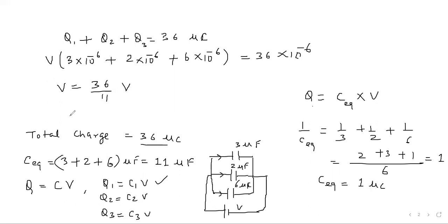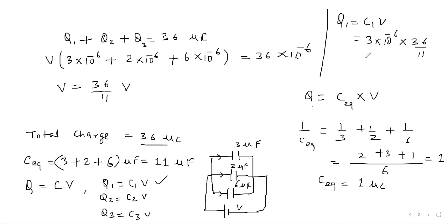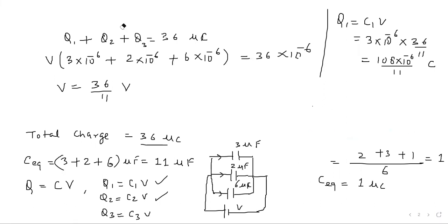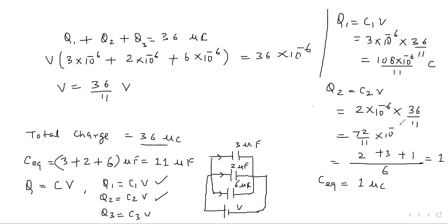Now we have got the value of V. So Q1 equals C1 times V, C1 is 3 into 10 to the power minus 6, and voltage is 36 by 11. Simplifying, Q1 becomes 108 into 10 to the power minus 6 divided by 11 coulomb. Similarly Q2 equals C2 times V, C2 is 2 into 10 to the power minus 6 and voltage is 36 by 11, so Q2 becomes 72 by 11 into 10 to the power minus 6 coulomb.